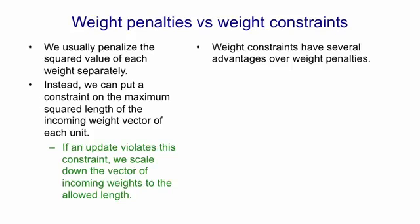Using weight constraints like this has a number of advantages over weight penalties, and I found they work noticeably better. It's much easier to select a sensible value for the squared length of the incoming weight vector than it is to select a weight penalty. That's because logistic units have a natural scale to them, so we know what a weight of one means.